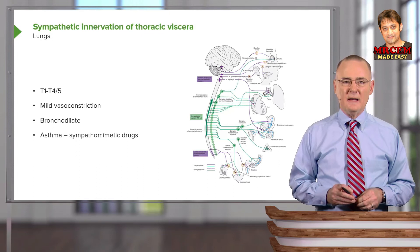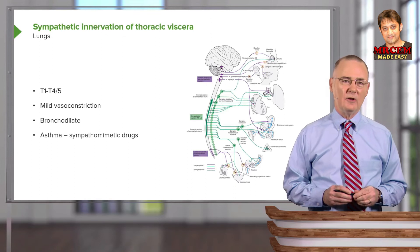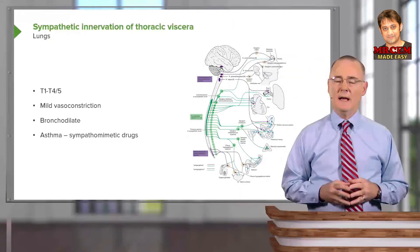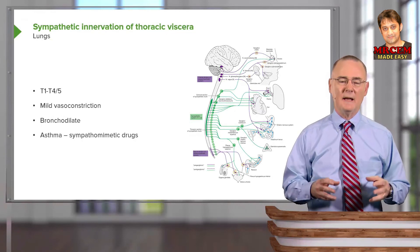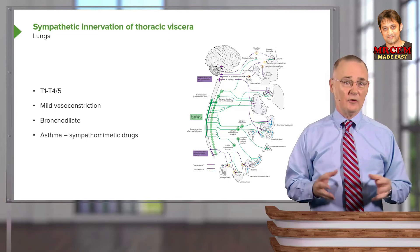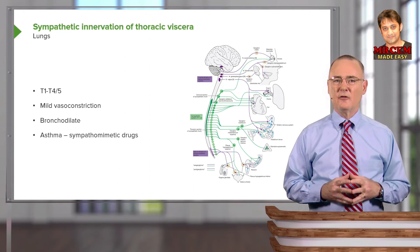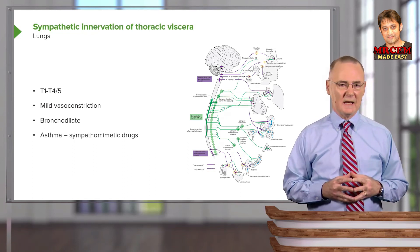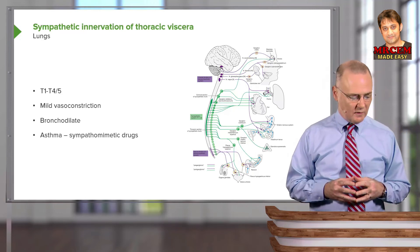The lungs receive sympathetic innervation from preganglionic neurons at T1 through T5. Sympathetic innervation mildly vasoconstricts blood vessels supplying the lungs and causes bronchodilation of the respiratory passageways. This is clinically very useful in asthmatic individuals: during an asthmatic attack, drugs that mimic sympathetic innervation — sympathomimetic drugs — can be administered to produce bronchodilation and relieve the attack.